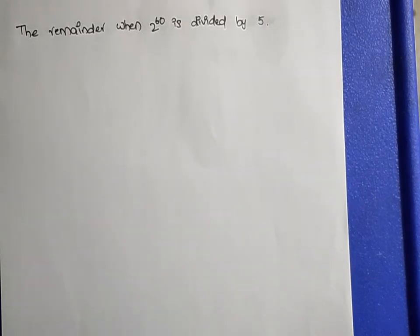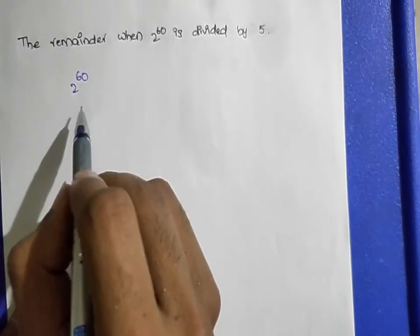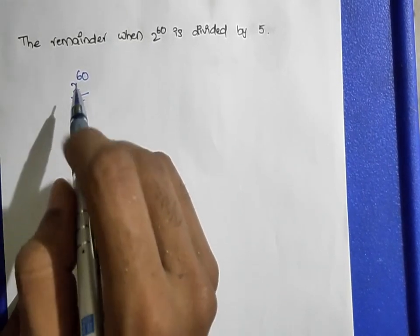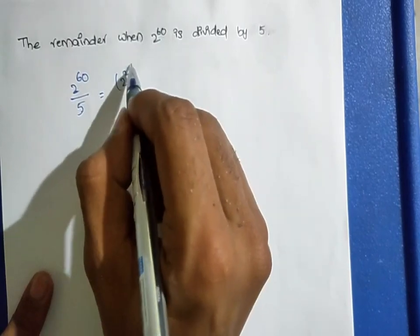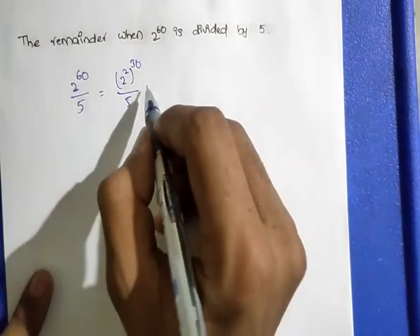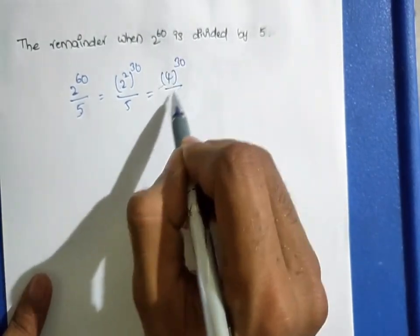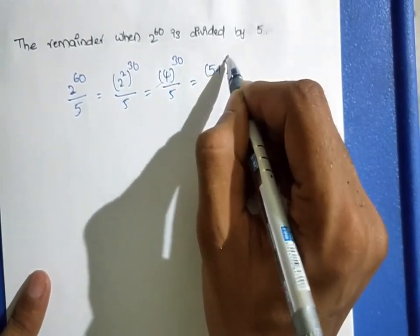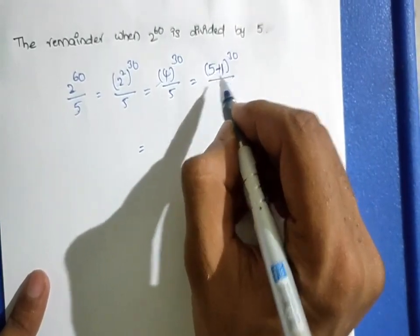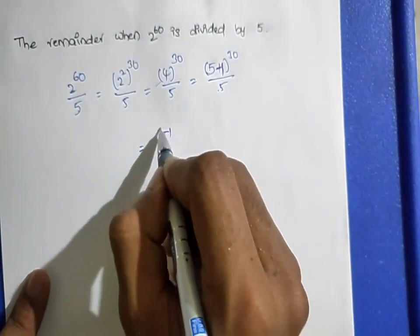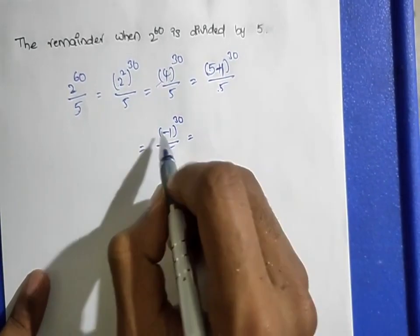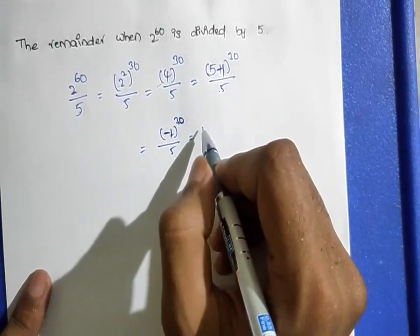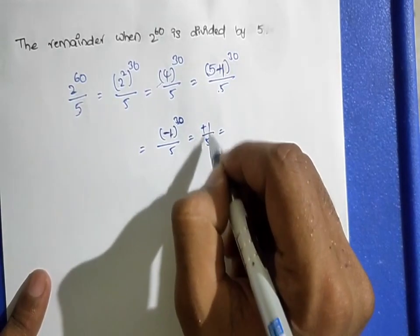The remainder when 2 power 60 is divided by 5. Write 2^60 as (2²)^30 = 4^30, divided by 5. Then express 4 as (5 − 1), so (5 − 1)^30 / 5. This gives (−1)^30. Since 30 is even, (−1)^even = +1. So the remainder is 1.